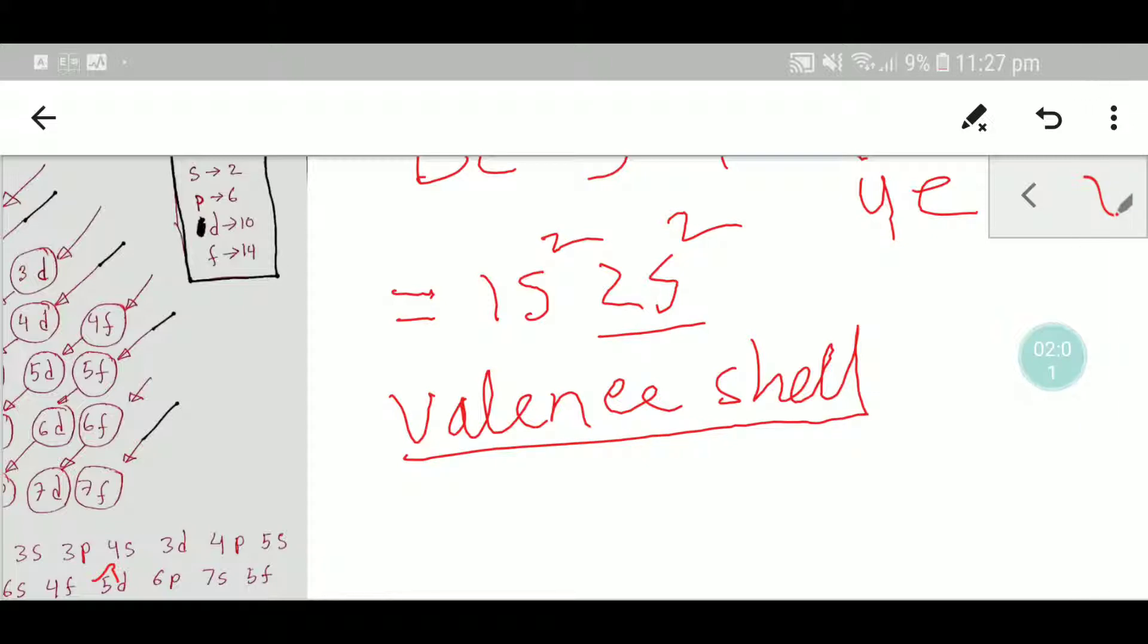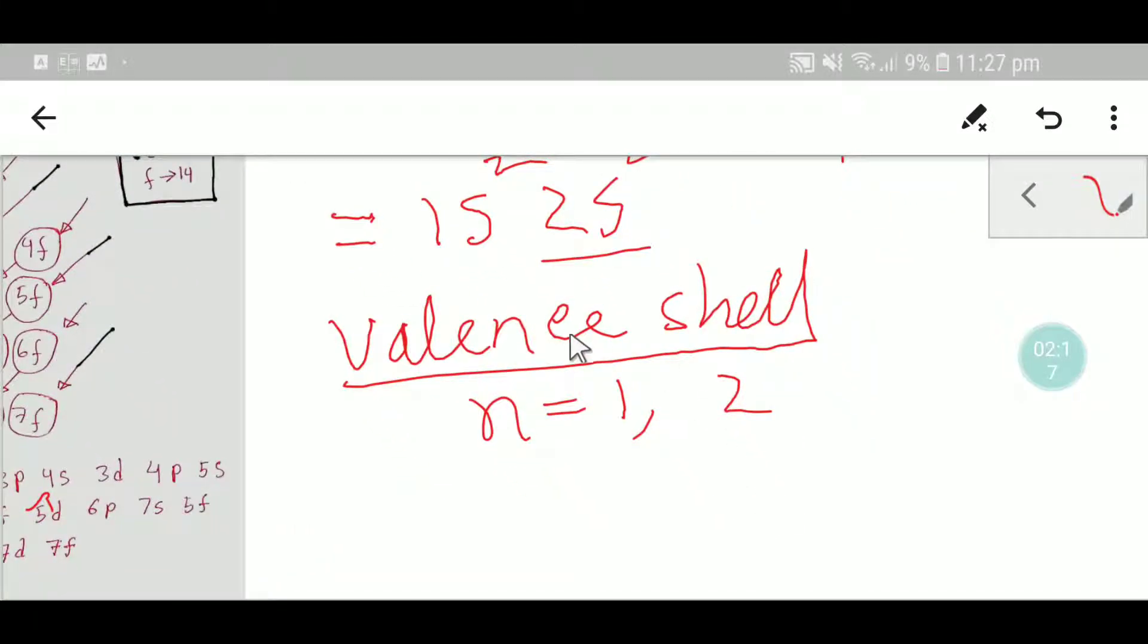Here we have the value of n is 1, then 2. Now we need to target the highest value of n to find out the valency shell. The highest value of n is 2, which means that 2s² is the valency shell of beryllium.